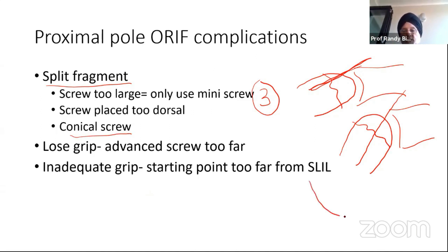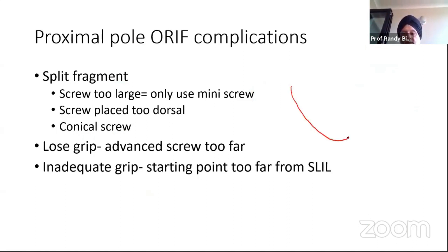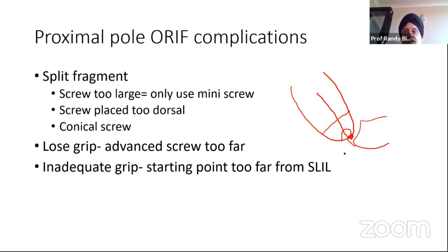It's important to flex the wrist quite a lot so that you get down the middle and your screw better captures that fragment. If you're using a conical screw, be careful — it might split the fragment. So be careful of the trailing end of the screw. When putting a screw in the scaphoid, if you start your screw entry too far from the scapholunate ligament, as you insert the screw to bury the head, you end up losing purchase. When treating a proximal pole fracture, very importantly, start inserting your screw at the scapholunate ligament — right there. That way, when you bury your screw, you're still well within the fragment.